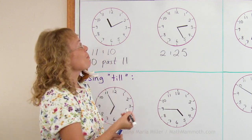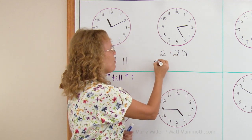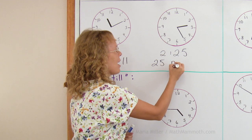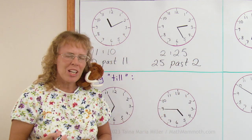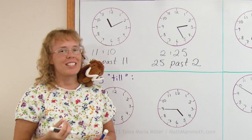And now the other way of saying it, we will say the minutes first. How many minutes it is past the whole hour? 25 past 2, or you can say 25 minutes past 2.